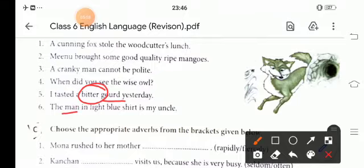The man in light blue shirt is my uncle. The man and what is he wearing? He is wearing a light blue. It is a describing of what? Of a shirt. And, the shirt belongs to my uncle. So, uncle is also a noun.